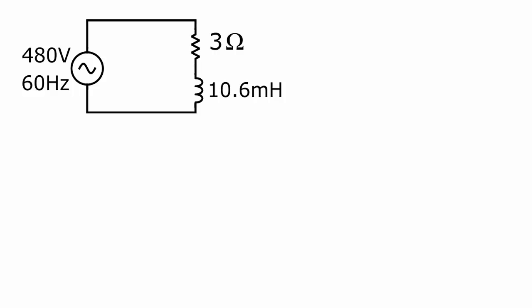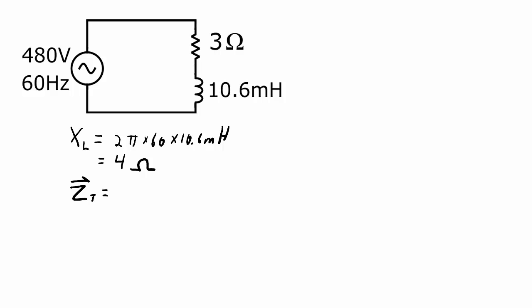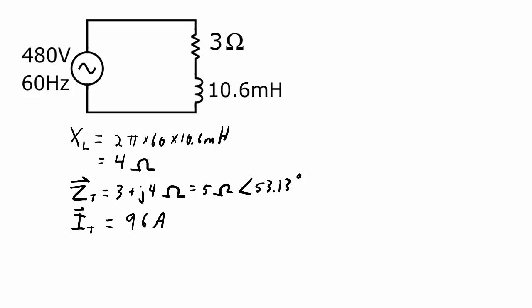Let's start off with the inductor. The inductor is 10.6 mH, therefore it has a reactance of 2π times 60 Hz times 10.6 mH, which works out to 4 ohms. The total impedance of this circuit in rectangular coordinates is 3 + j4 ohms, or 5 ohms with a phase angle of 53.13 degrees. The current in this circuit is 480 volts at a phase angle of 0, divided by that total impedance, which works out to 96 amps at a phase angle of minus 53.13 degrees.